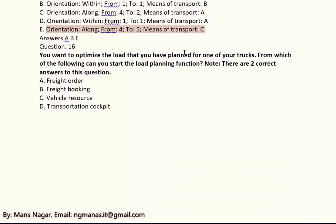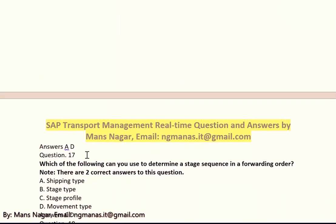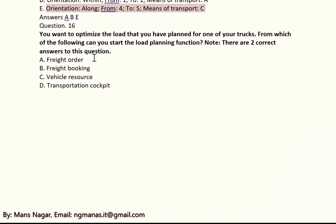Now you want to optimize the load that you have planned for one of your trucks. From which of the following can you start the load planning function? There are two correct answers: A and D — A is freight order, D is transportation cockpit.